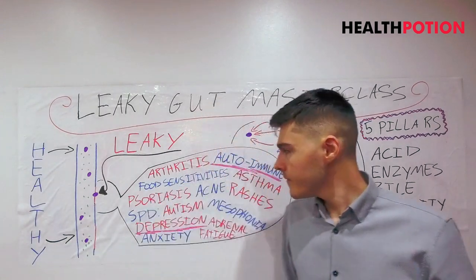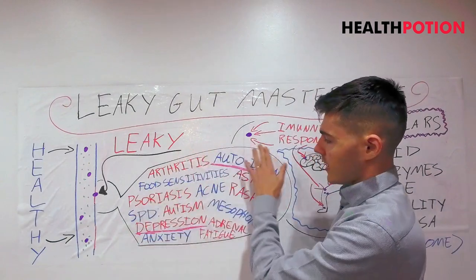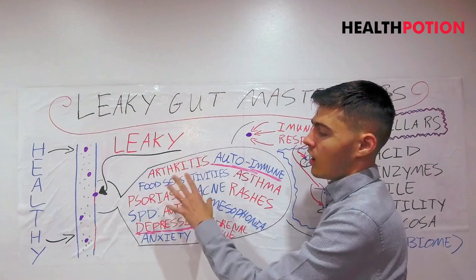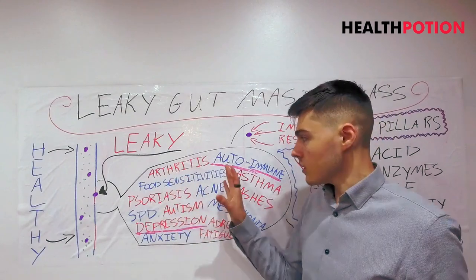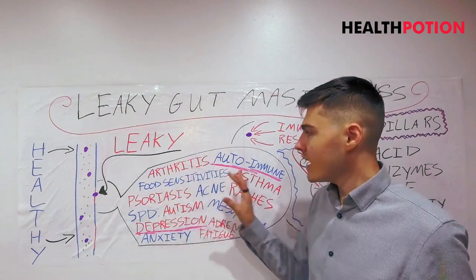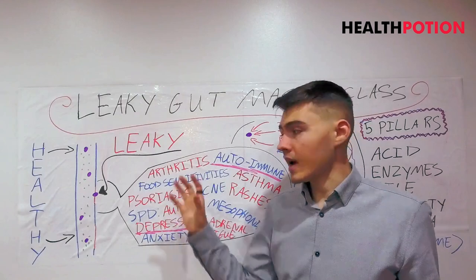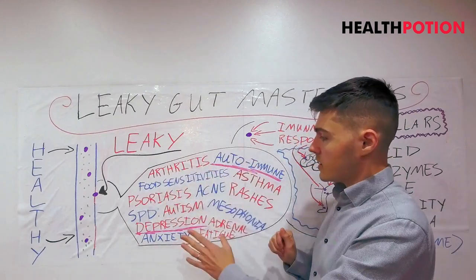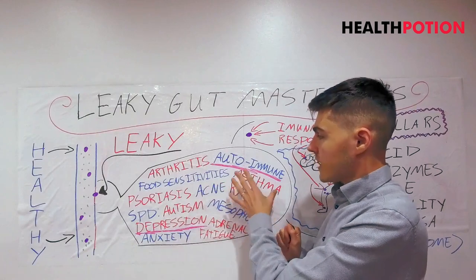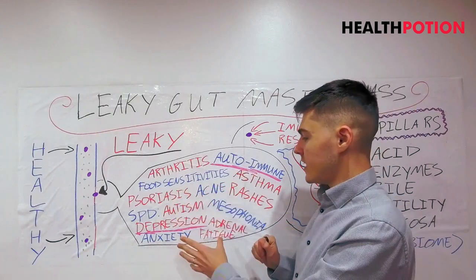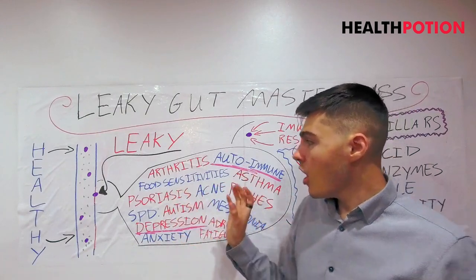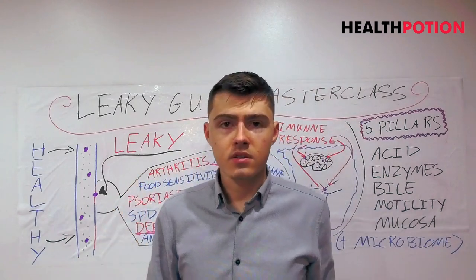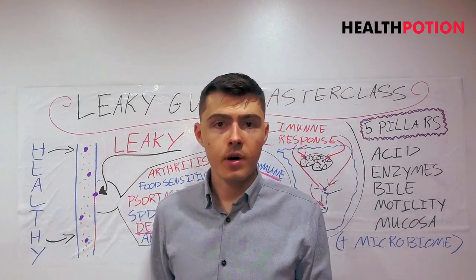The chances are you're struggling with something on this list. This isn't an exhaustive list — there are some of you watching that don't have anything on this list but have something else that can be connected to leaky gut. So as you can see, we've got arthritis, immune conditions, depression, skin rashes, asthma, psoriasis, anxiety, adrenal fatigue — all of these things can be connected to gastrointestinal hyperpermeability.